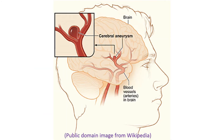An important association of coarctation of aorta is the weakening of the blood vessels of the brain, which causes them to bulge out. These bulges in the blood vessels of the brain with weakened walls are called berry aneurysms. Berry aneurysms can rupture later and bleed between the coverings of the brain. Sometimes this can result in a stroke as well.